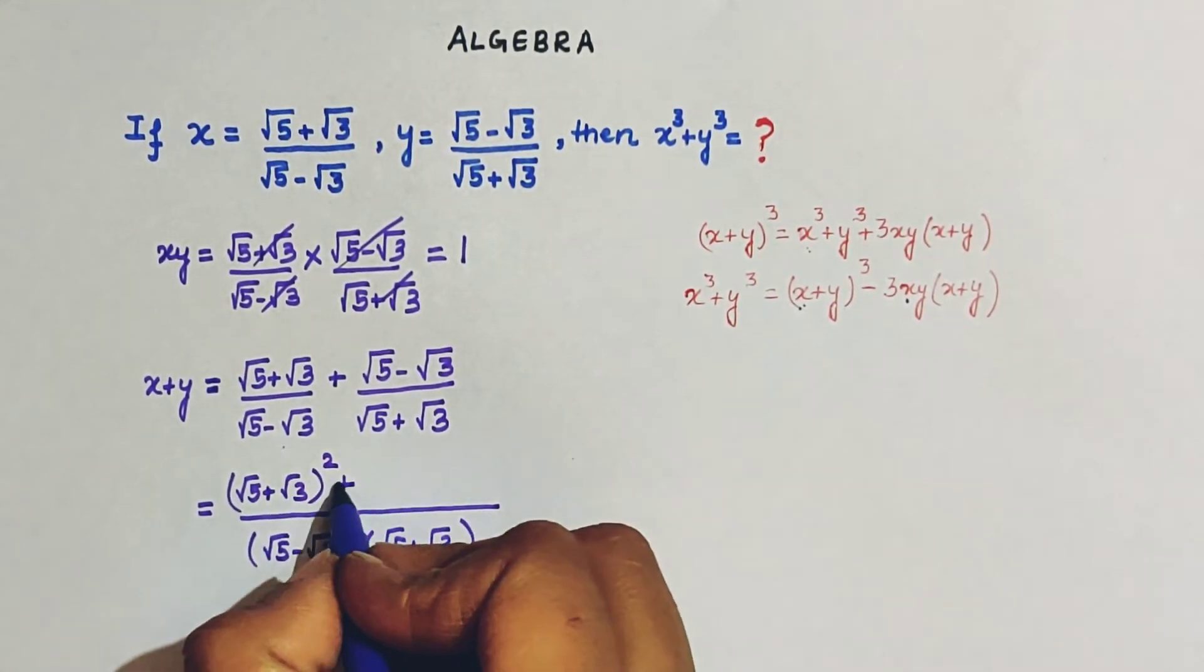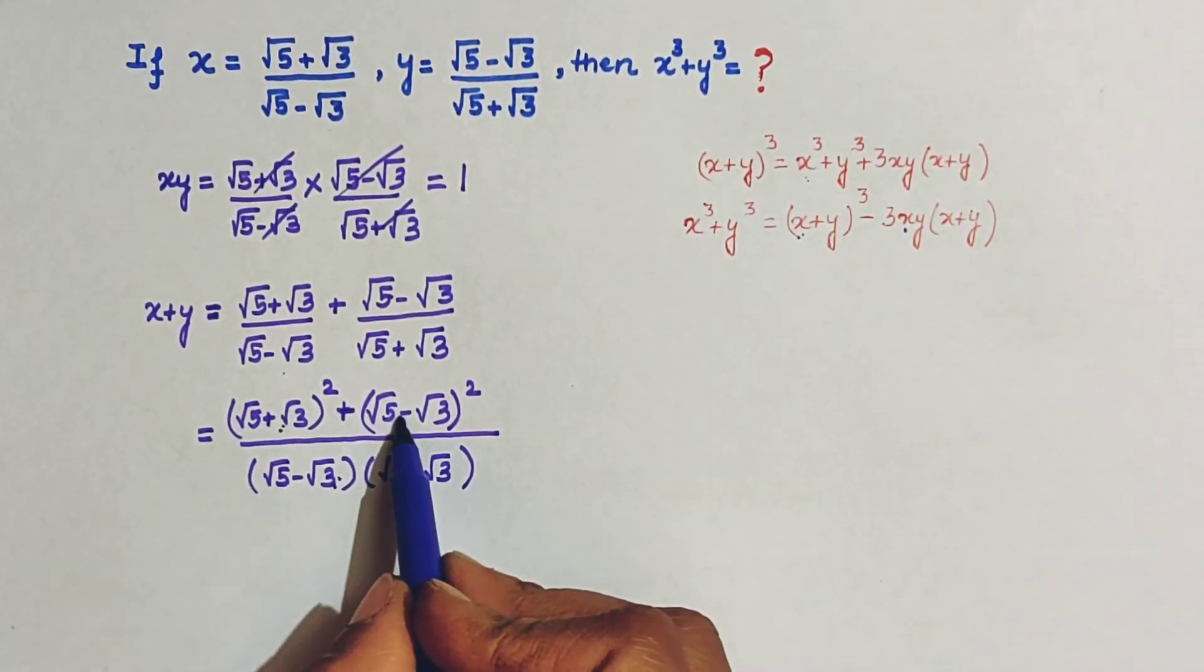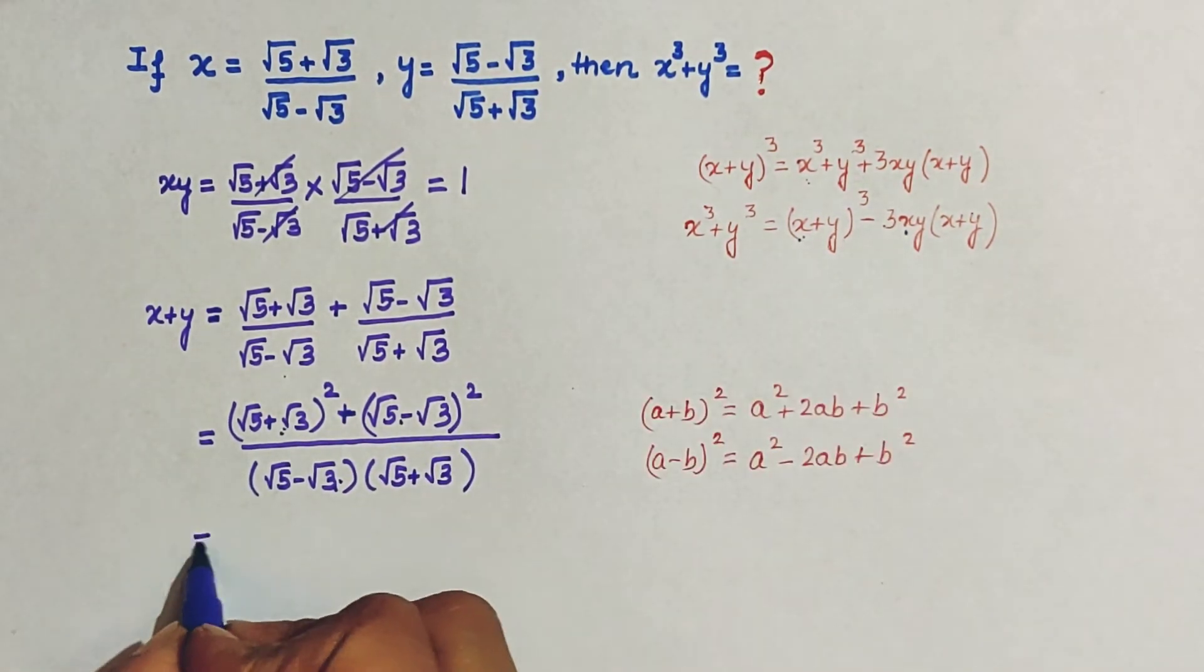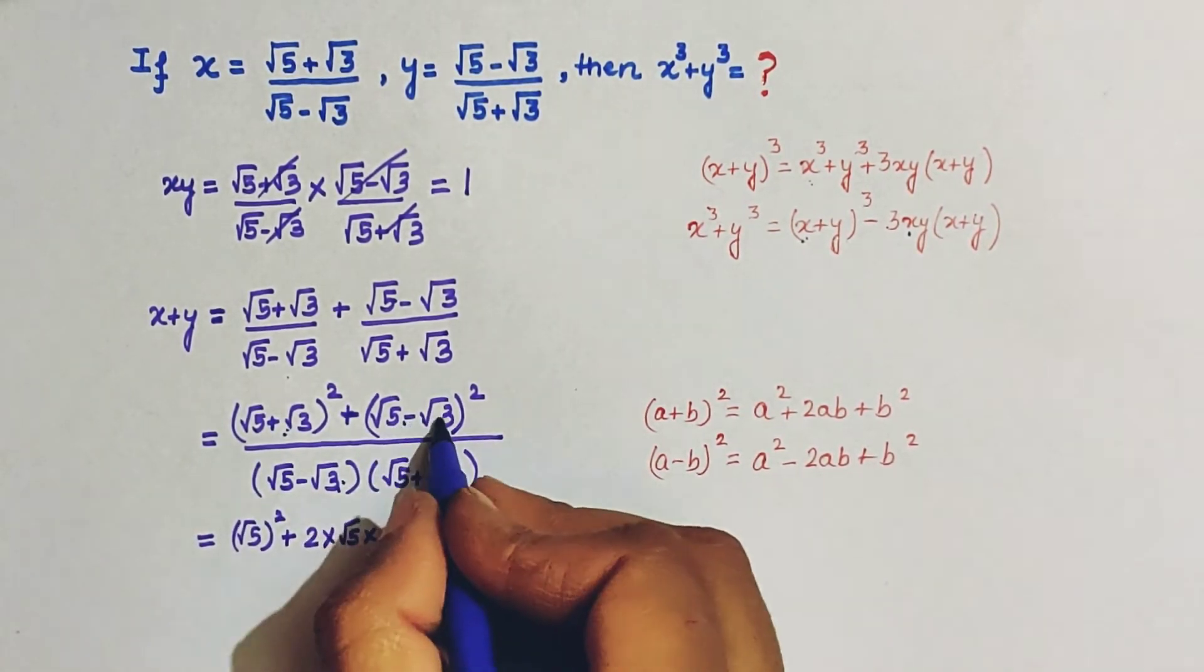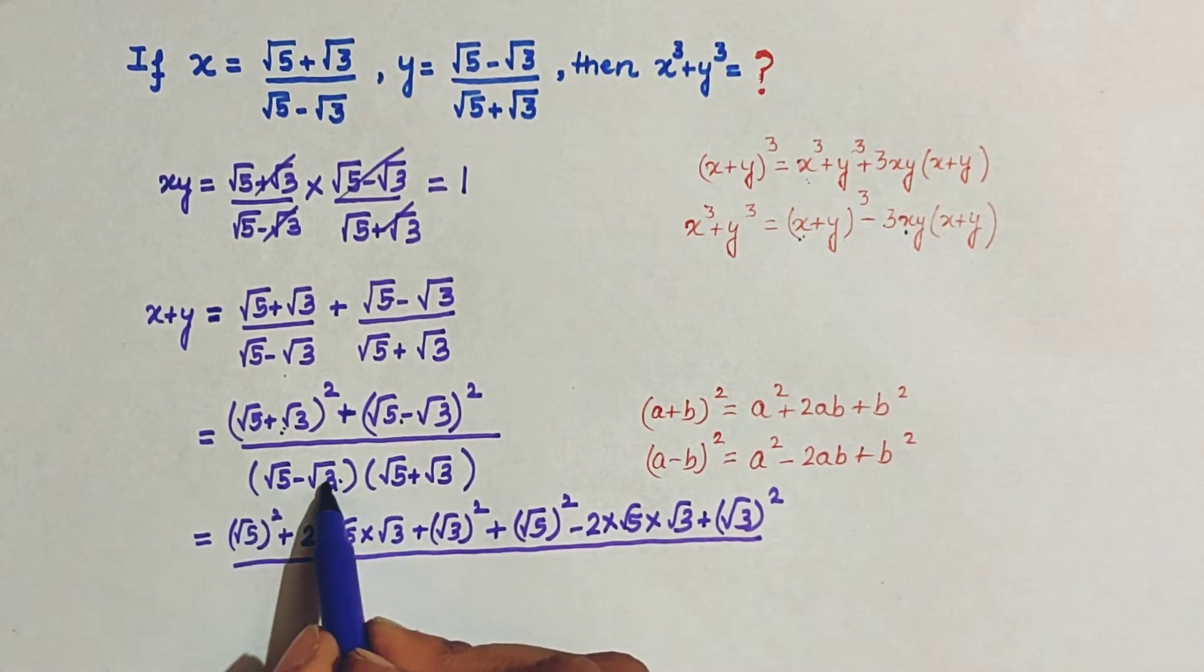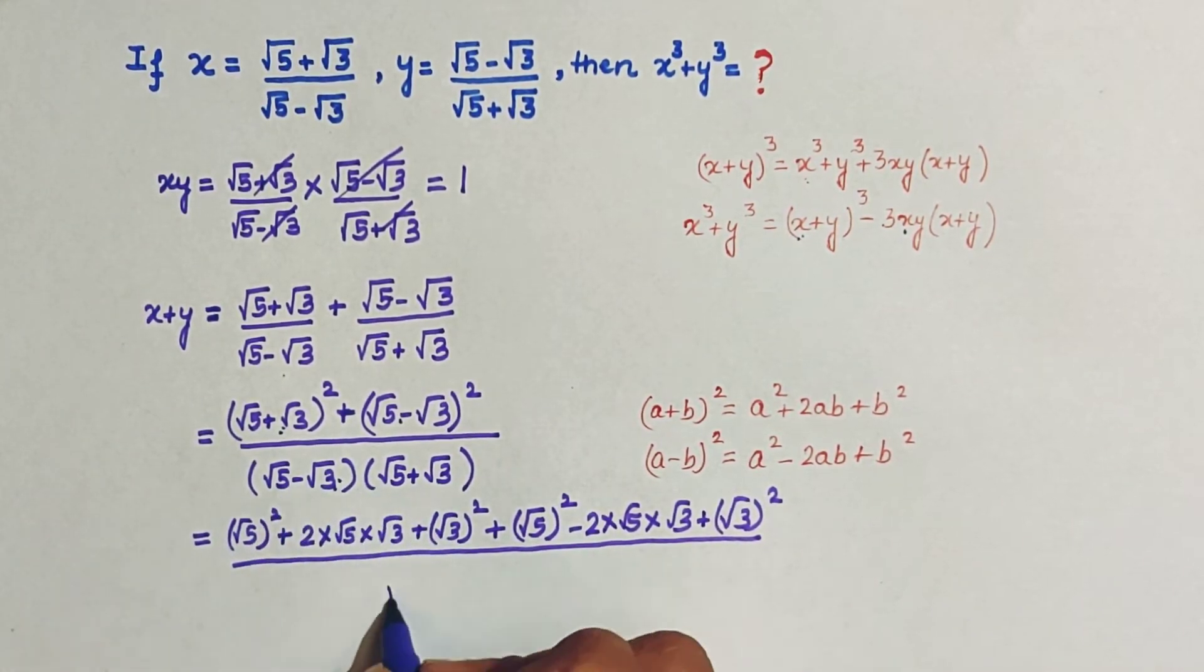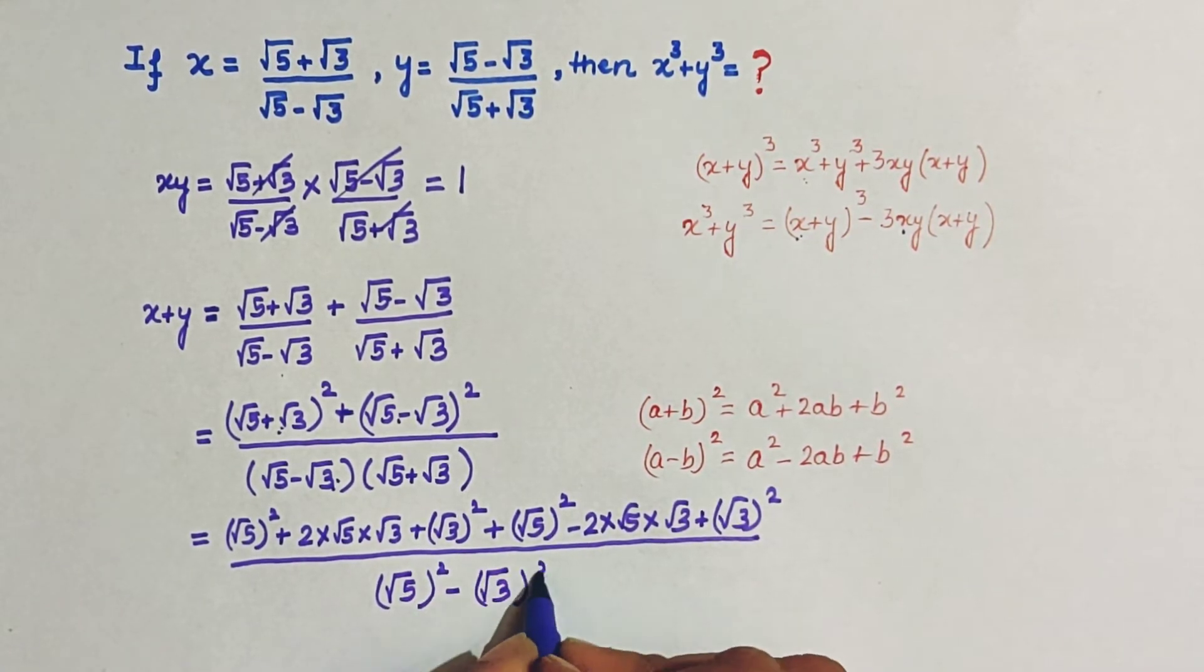अब यहाँ पर आप इसे expand करने के लिए A plus B whole square, और A minus B whole square की identity यूज कीजिए. Right? तो यहाँ पर A क्या है root 5, B क्या है root 3. So this will be plus, यहाँ पर A minus B whole square की identity यूज कीजिए और this is A minus B into A plus B. So identity से हम इसको लिख सकते हैं A square minus B square, right?